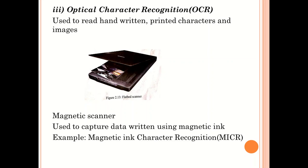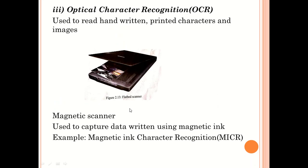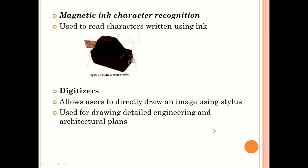Then we have the magnetic scanner. A magnetic scanner is basically used to capture data written using magnetic ink. This is mainly used to read checks. It is called Magnetic Ink Character Recognition, or MICR. It checks signatures and everything that has been written on the check. This machine enables you to identify characters written using magnetic ink, and it captures those written with magnetic ink.